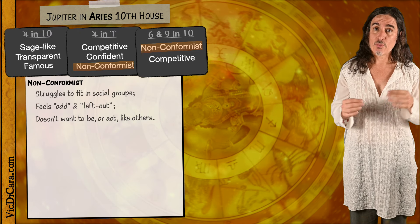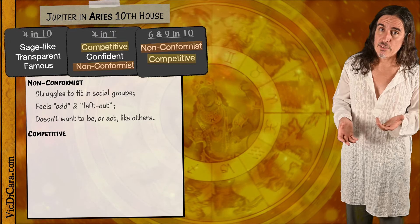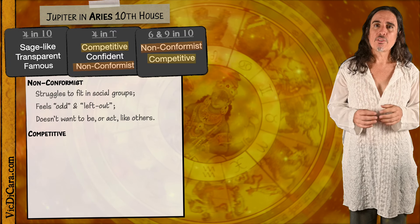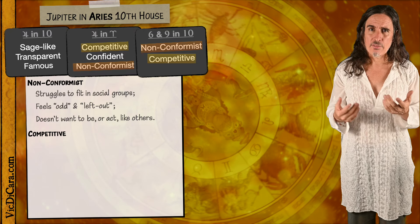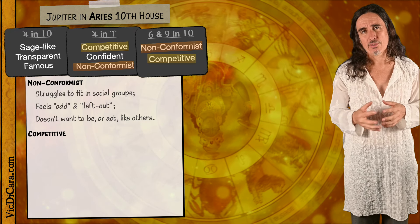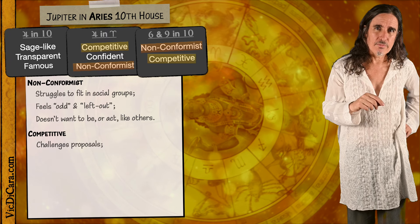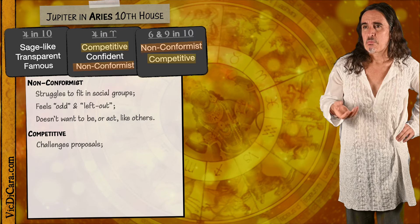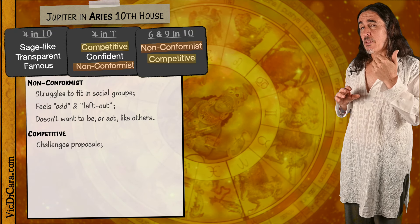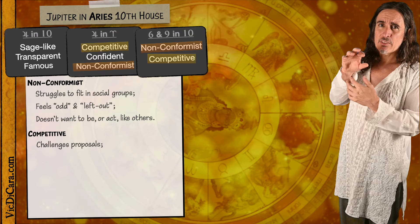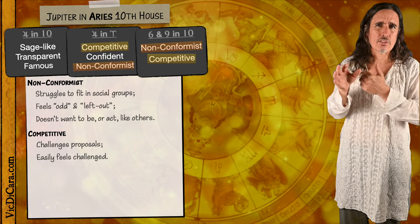Another thing that appears in two columns is the word competitive. Jupiter in Aries is very competitive and ambitious, and the Sixth and Ninth Lord in the Tenth House is very competitive and competes well. So Jupiter in Aries in the Tenth House really symbolizes somebody who is extremely competitive. In real-life interactions, this person will challenge proposals that are made — no matter what you say, they'll argue with it. Even if they kind of agree, their mind responds in a challenging way. Interestingly, they don't necessarily have very tough skin, so even though they're very challenging, they feel easily challenged and therefore easily provoked into confrontational situations.